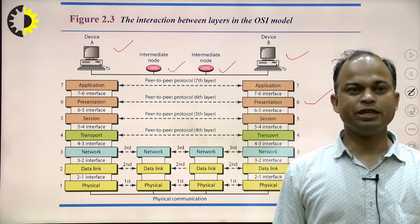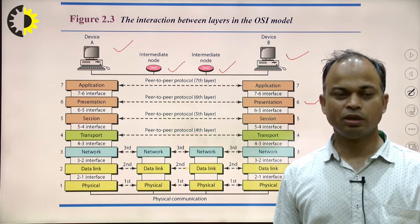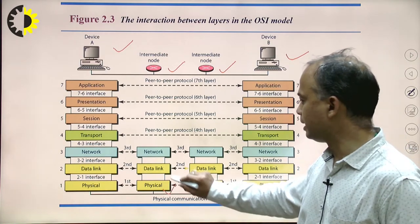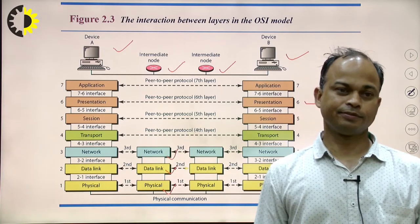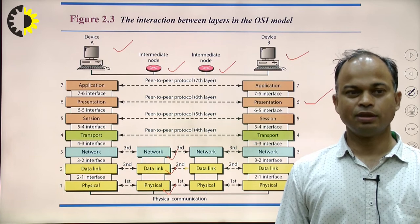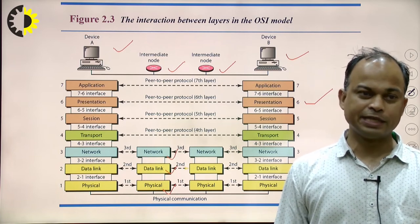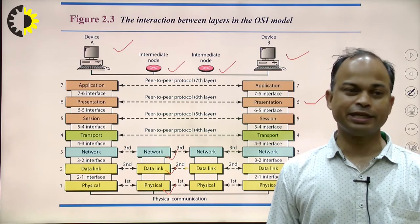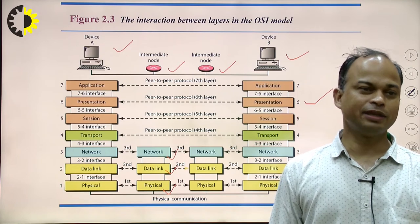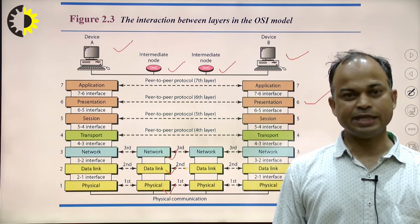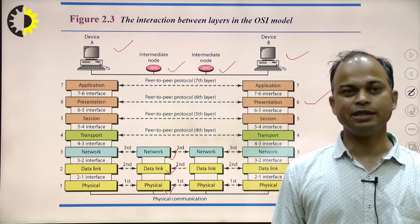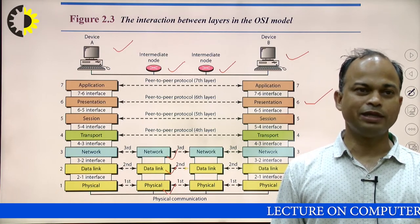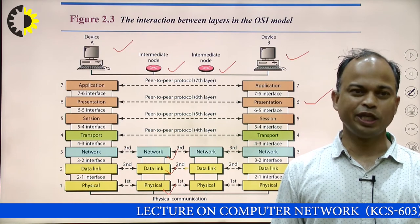At the intermediate node, three layers are responsible: physical layer, data link layer, and network layer. So at the intermediate node, only these three layers play important roles — there is no role of the upper four layers. At the sender side, all seven layers play an important role, and at the receiver side, all seven layers play an important role. At the intermediate node, we have only three layers.